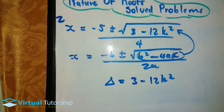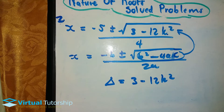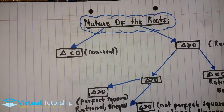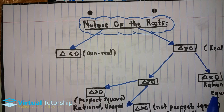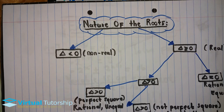For which values of k will the roots be equal? From the mind map, for the roots to be equal, delta must be equal to zero. So we set 3 minus 12k squared equal to zero.